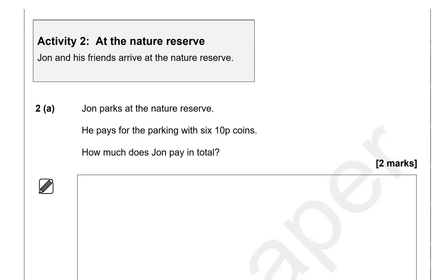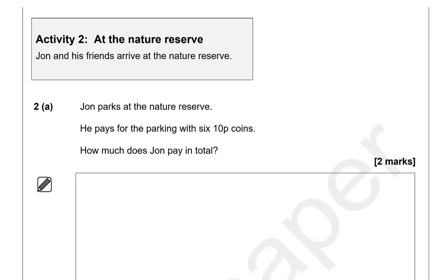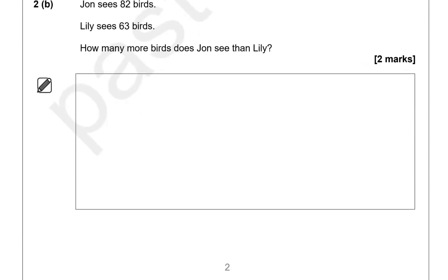So that's six lots of 10p coins. So six times 10, which you can do using a calculator as well, gives us 60 pence. John sees 82 birds. Lily sees 63 birds. How many more birds does John see than Lily?